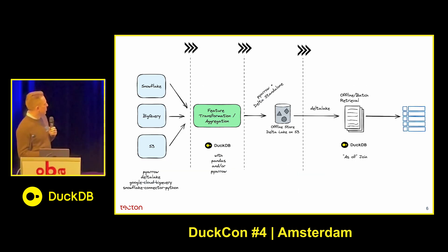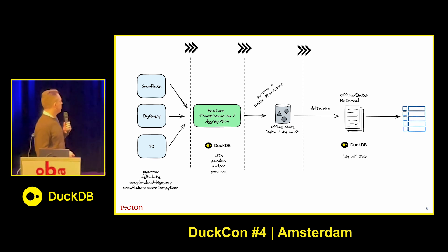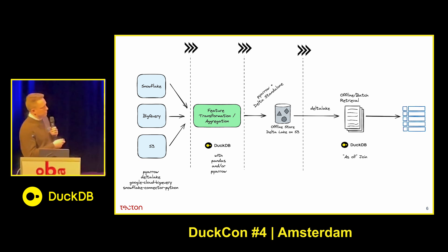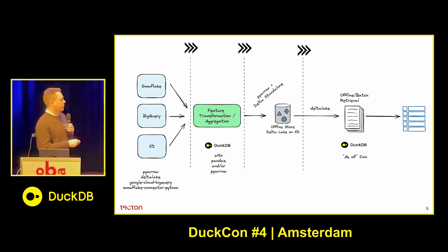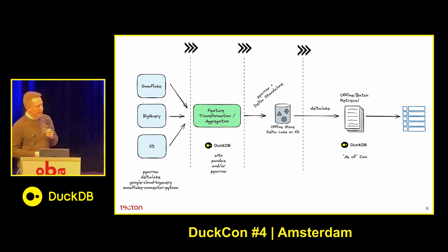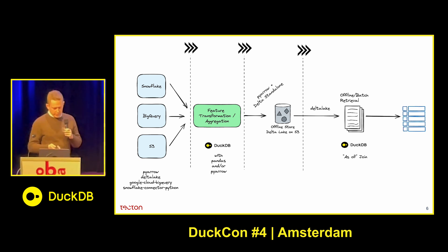This is a high-level overview of what we came up with. These arrow things here represent Arrow datasets that we pass between the different stages. We use first-party libraries for different data sources, which all produce Arrow conveniently. We implement the transformation step using DuckDB, sometimes with Pandas UDFs — that's what the customer provides. We still use Delta Lake for storage, facilitated by Arrow. And for the final as-of joins to produce training datasets, we use DuckDB for that as well. We can export the data in whatever format the customer requires, again thanks to Arrow.